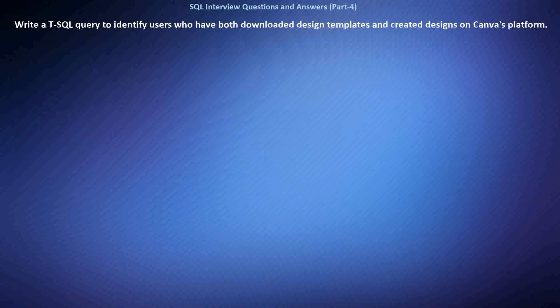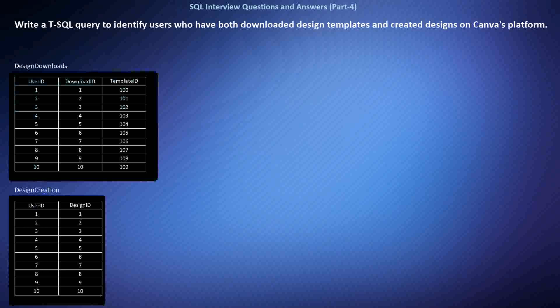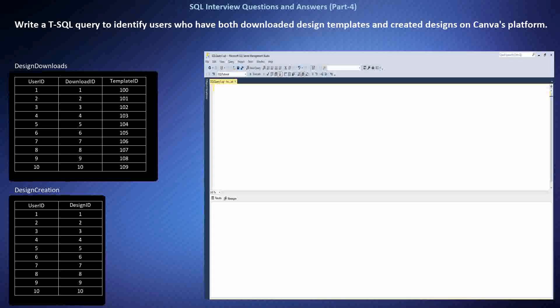Write a SQL query to identify users who have both downloaded design templates and created designs on Canva's platform. We want to find users who are actively engaged by both downloading templates and creating designs, querying from two tables: one for design downloads and another for design creation. This SQL query joins the DesignDownloads and DesignCreation tables on the user ID and selects distinct user IDs who have performed both activities.